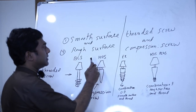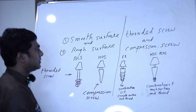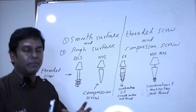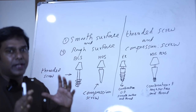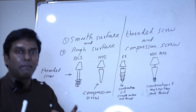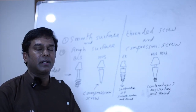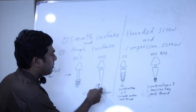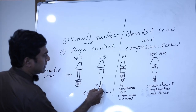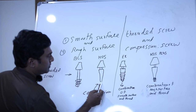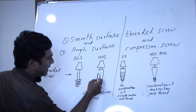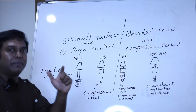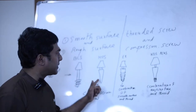Now coming on to KIOs — they are basically compression screws. You should understand why they are called compression screws. These are made to compress the bone. For example, if you have a lot of soft bone, as the implant passes through the bone with its small apical area, the diameter increases and the bone gets compressed, giving you primary stability.